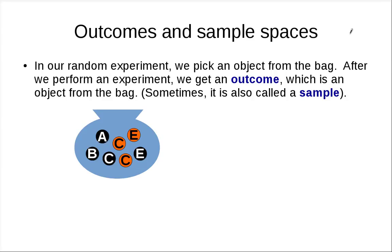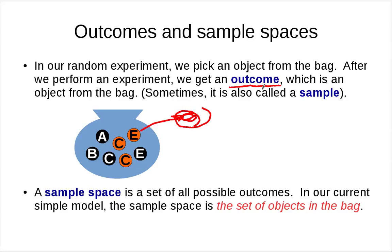Let's talk about the vocabulary we are going to use. When we perform a random experiment, we get an outcome. Like picking one ball from the bag — that's an outcome. Sometimes this is called a sample, but using the term 'outcome' is more general because later we will talk about more complicated random experiments. A sample space is the set of all possible outcomes — in this case, the set of all objects in the bag.